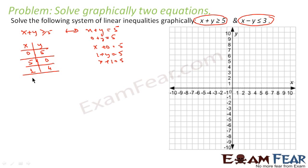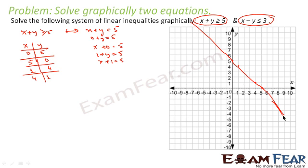So we have these four points: (0, 5), (5, 0), (1, 4), and (4, 1). We'll plot these points and draw a line. So this is the graph we have got for x plus y is equal to 5.